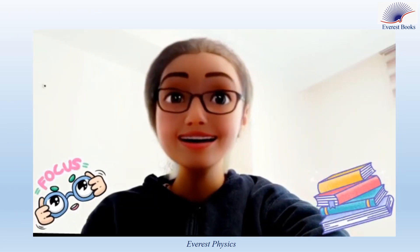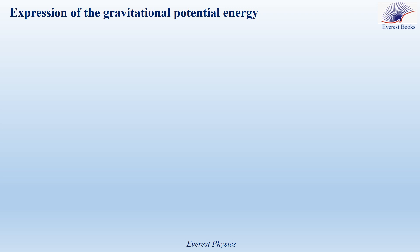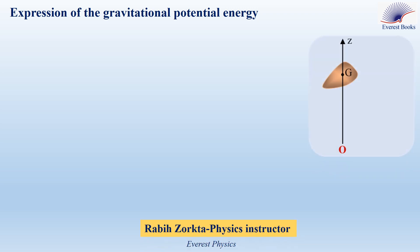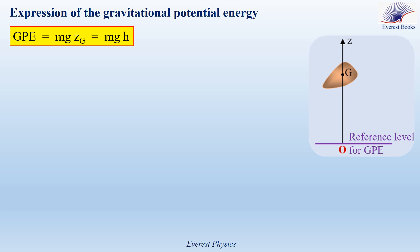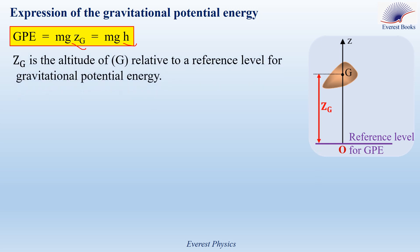Focus, please. This is important — the expression of the gravitational potential energy. Consider a system or an object of center of mass G. Before calculating the gravitational potential energy of the system object-Earth, we have to take a reference level for gravitational potential energy. This reference level could be the surface of the Earth, the surface of a table, the ceiling, or any horizontal plane. The gravitational potential energy of the system object-Earth is given by M·G·Z_G, where M is the mass of the system, G is the gravitational acceleration at the location of the object, and Z_G is the altitude of the center of mass relative to the reference level.